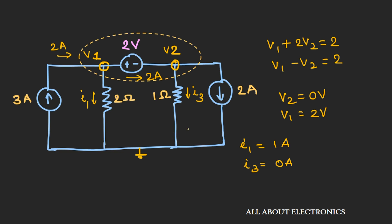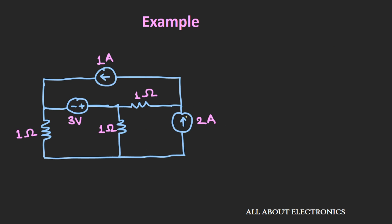Now let's solve one more example based on the concept of supernode. We have an electrical circuit and we want to find the current through the 1 ohm resistor — let's call it Ix. This circuit has 4 nodes: node 1, node 2, node 3, and node 4 which is the reference node. V1, V2, and V3 are the voltages at nodes 1, 2, and 3 respectively. Since there is a voltage source between node 1 and 2, let's treat node 1 and 2 as a supernode.